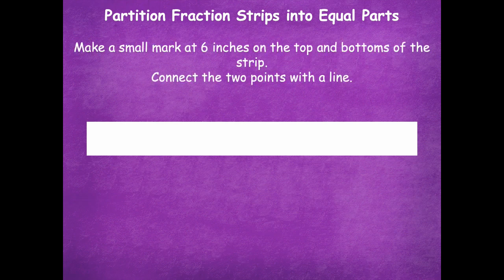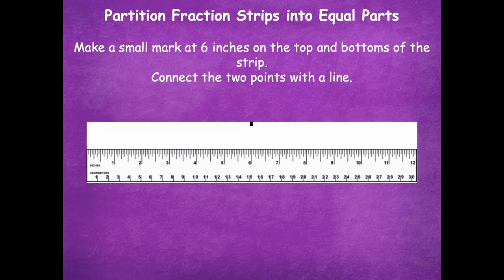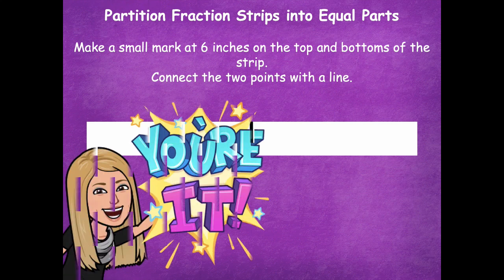You're going to make a small mark at six inches on the top and bottom of the strip, and then connect the two points with a line. I'll show you how to do it and then give you a minute to do that as well. I'm going to take my ruler, at six inches make a little line, then move my ruler down and put another dot at six inches on the bottom, then connect those. Go ahead and pause the video, find six inches, draw a dot on the top and the bottom, connect those lines, and then click play when you're ready for the next step.